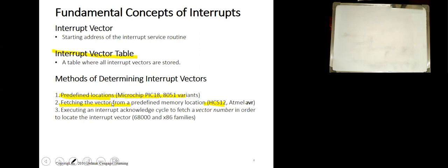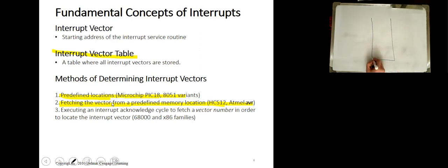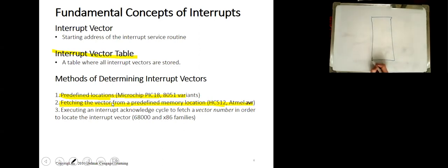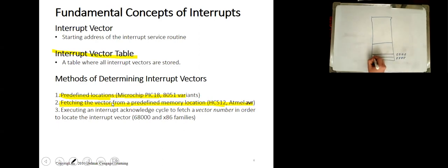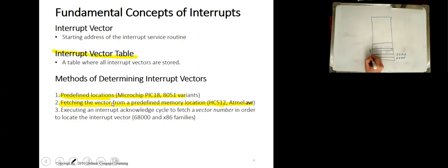In the HCS12, there is a certain set of memory locations reserved to store the interrupt vector table. The table starts from address 0xFFFE and goes down. Every two locations are needed for every interrupt source because the address is 16 bits. In each of these two locations we store the ISR address for the corresponding interrupt source.